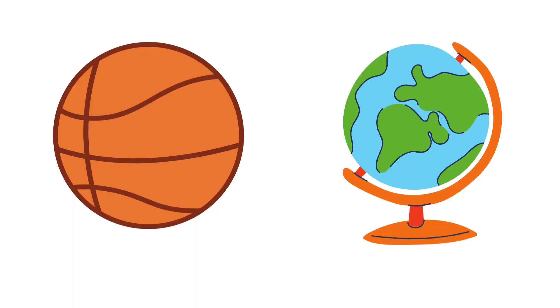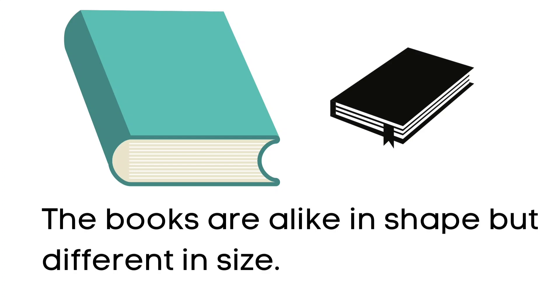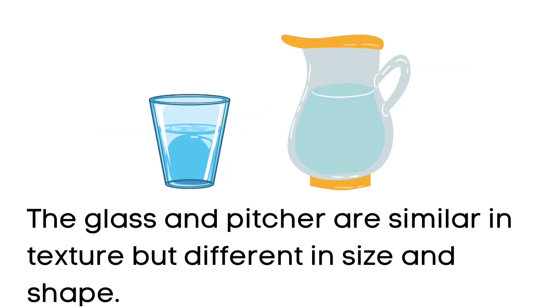Look at these two objects. Let's describe and compare them. Identify their similarities and differences. The ball and the globe are alike in shape and in size. The books are alike in shape but different in size.